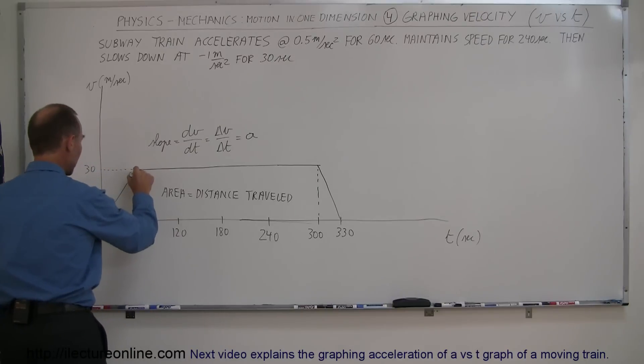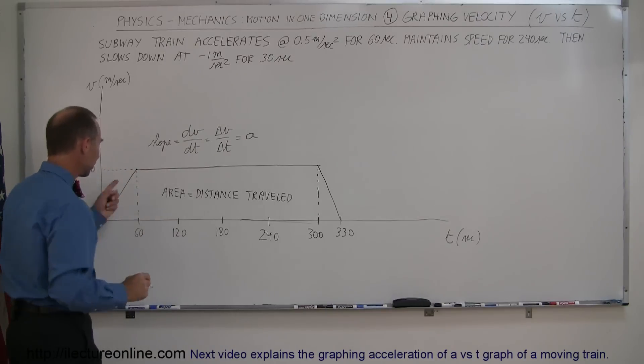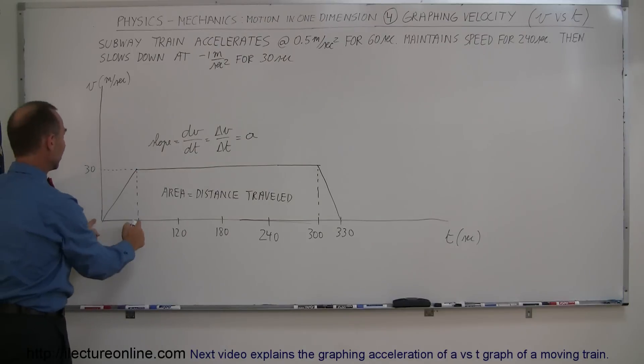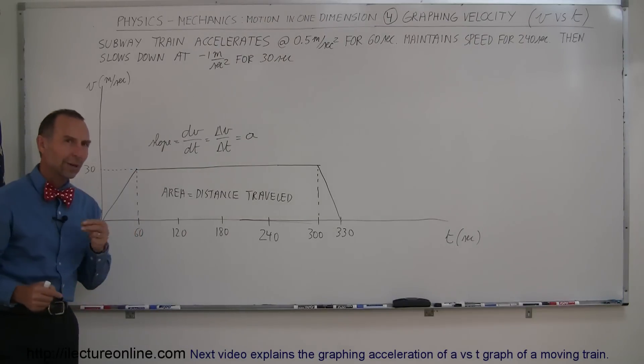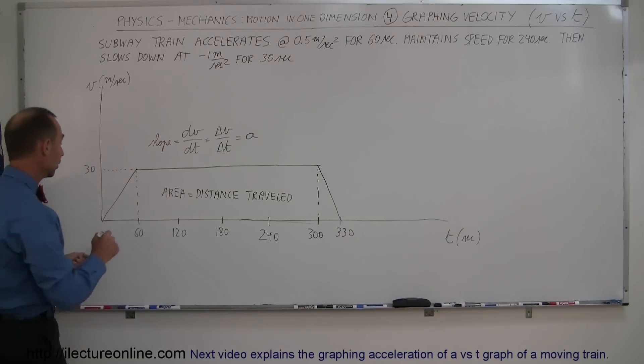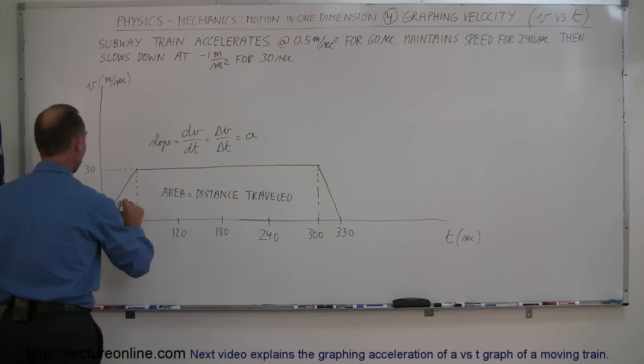Here we have a triangle. So the area of this triangle is one half the base times the height. The base is 60, the height is 30. 30 times 60 is 1800 times one half, that means 900. So the train travels 900 meters in the first 60 seconds.